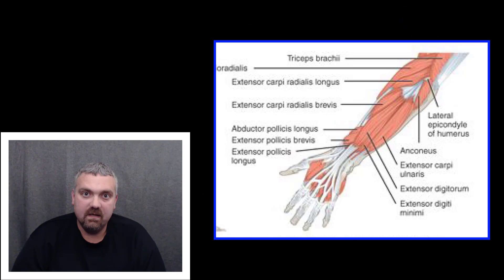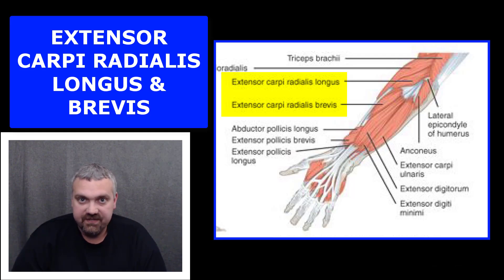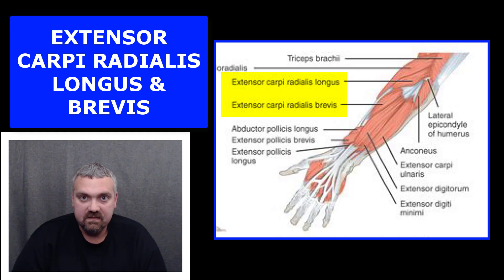The key example here would be the extensor carpi radialis muscles. Extensor carpi means it extends the wrist. Extensor carpi radialis tells us that it's on the radial, or thumb, side of the forearm. So we have two of them: the extensor carpi radialis longus and the extensor carpi radialis brevis. Whenever you see that a muscle has the name longus, you know there's going to be a brevis somewhere.